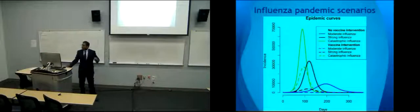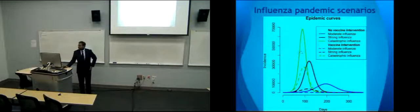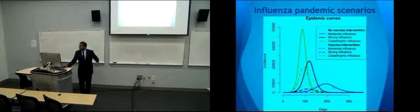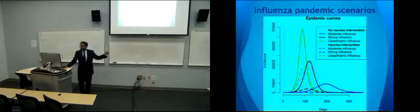When you plot this out, we have the three different epidemic scenarios. In the catastrophic scenario without vaccine intervention, there's a large epidemic, and with the vaccine intervention the epidemic is reduced. In the moderate scenario without vaccination an epidemic takes place, but with vaccination there is hardly any epidemic occurring.